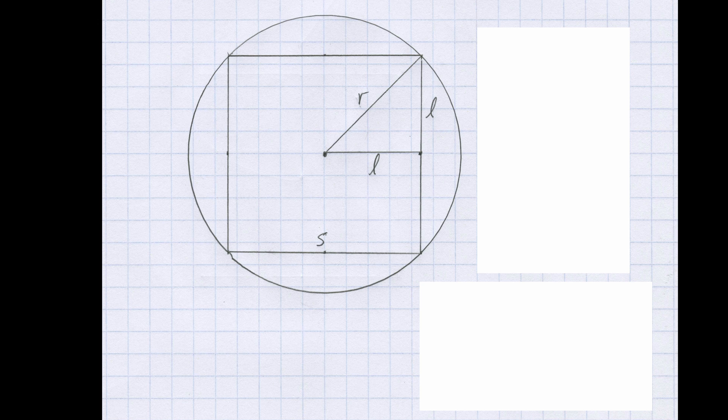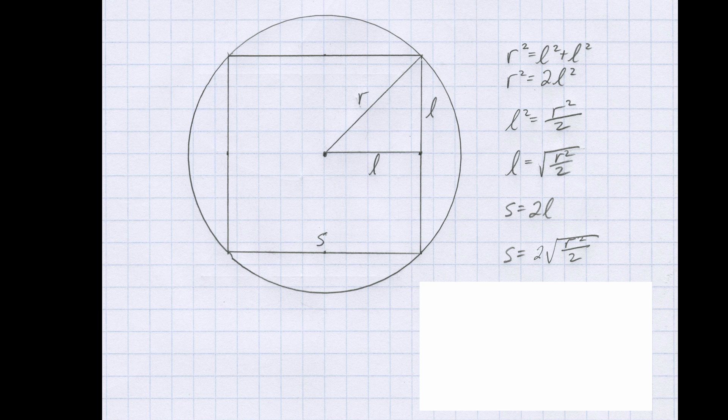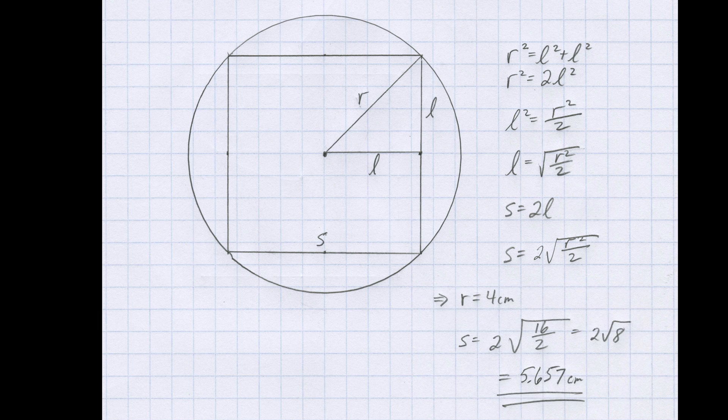With the circle of radius r, we can inscribe a square where the side s is 2 times the length of the right triangle shown here. Using the Pythagorean theorem, we can compute that l is the square root of r squared divided by 2. We know that s is 2 times l, so plugging in a radius of 4 centimeters,